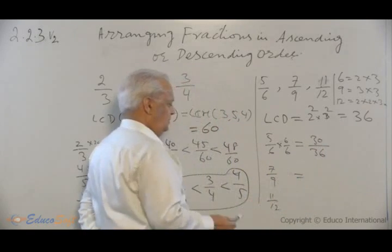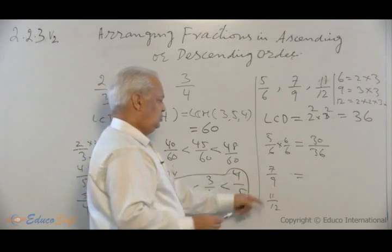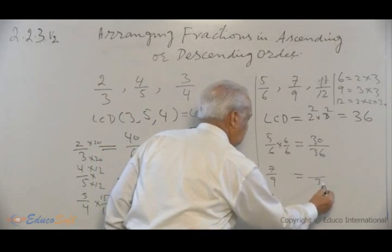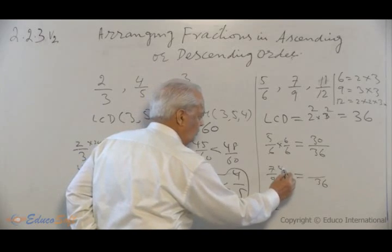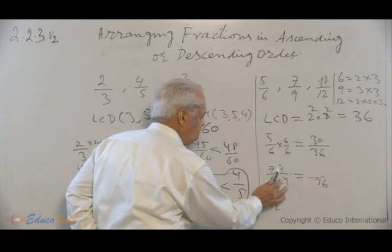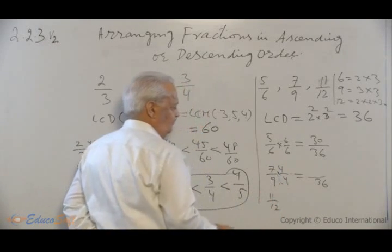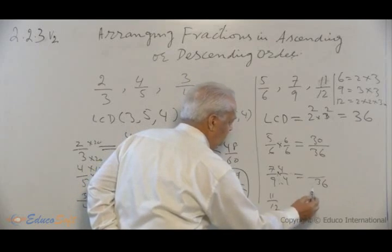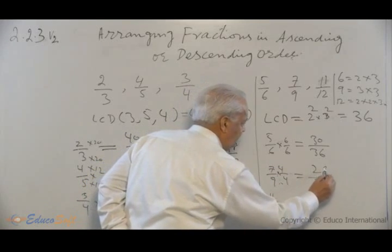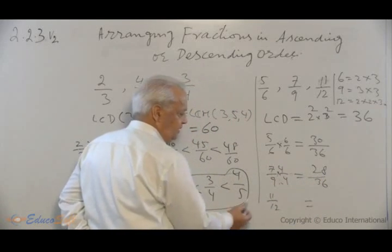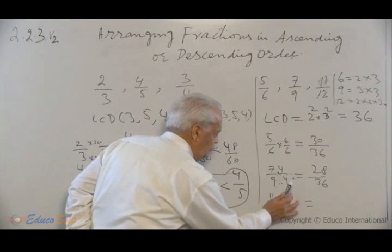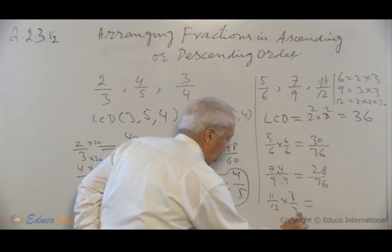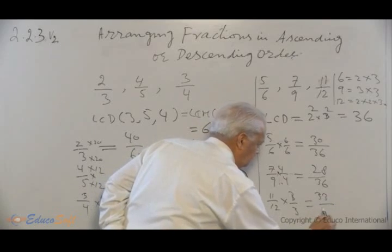And here 7 over 9, you want 36 in the denominator. 9 times what is 4, so 4 over 4. 7 times 4 is 28 over 36. And similarly here, 12 times what? 12 times 3. So multiply with 3 over 3. That is 33 over 36.